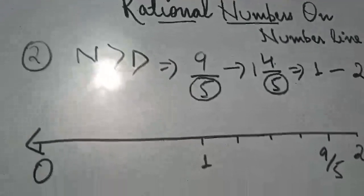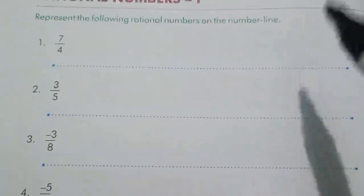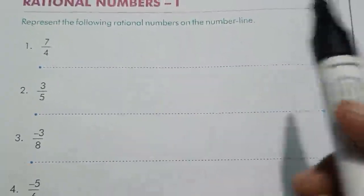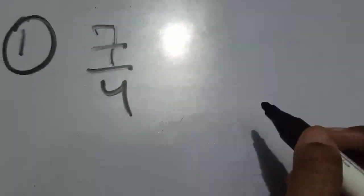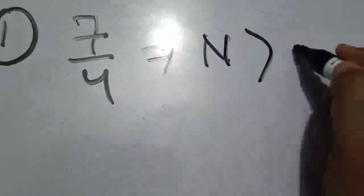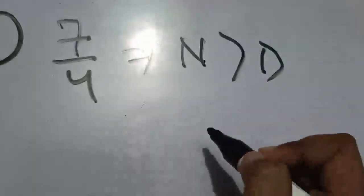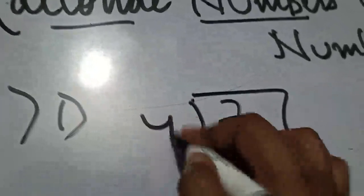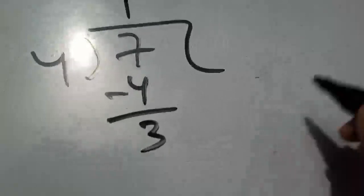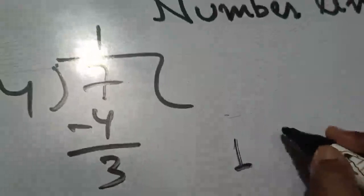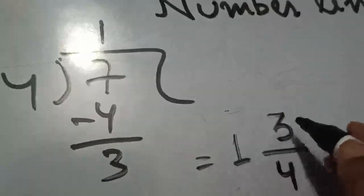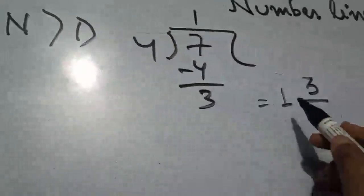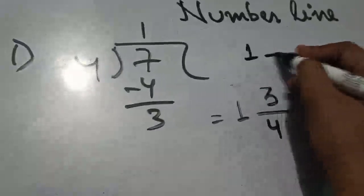Worksheet mein first part hai — 7 by 4. Pencil aur scale use karna. Main board pe dikhata hun. Denominator bada hai numerator se, to dusri condition hai — mixed mein convert karna padega. 7 by 4 ko mixed mein convert karte hain: quotient 1, remainder 3, divisor 4 — so 1 whole 3 by 4. Cross-check: 4 times 1 plus 3 equals 7. Sahi hai. To 7 by 4, 1 aur 2 ke beech mein lie karega.